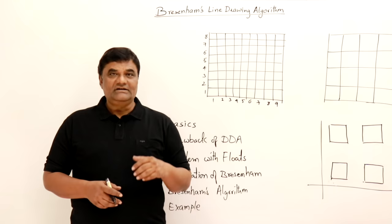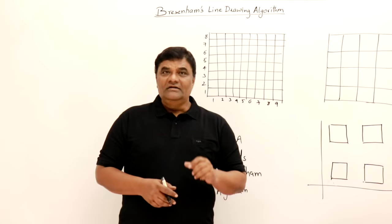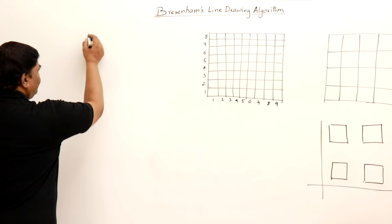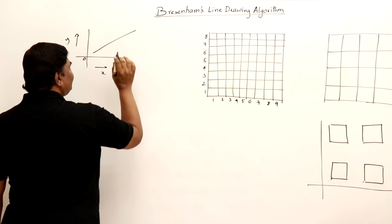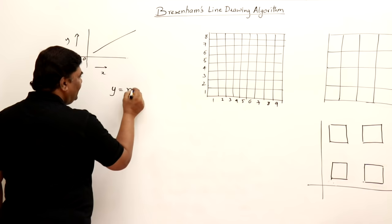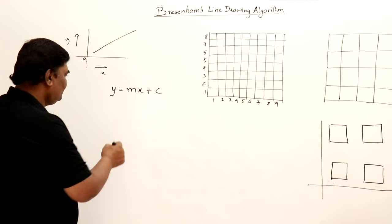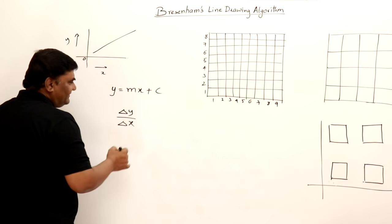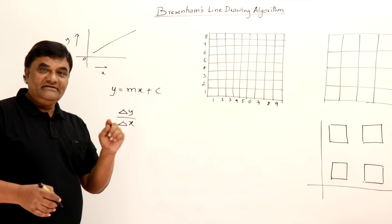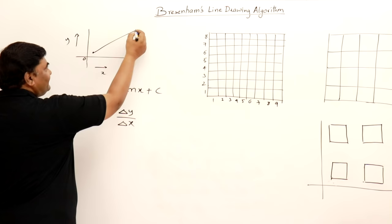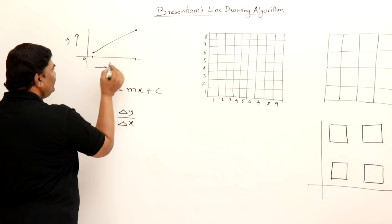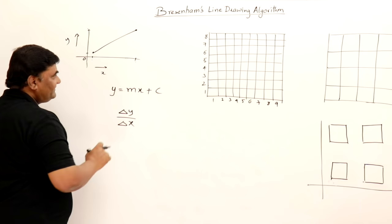Let us start with the basics. Any line in a coordinate system is represented by the formula y = mx + c, where m is the slope of the line — that is, the difference in y divided by difference in x (dy/dx) — x and y are coordinates, and c is the y-intercept where the line intersects the y-axis.